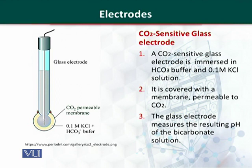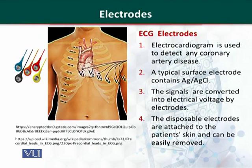The gas permeable membrane does not allow water and other ions to reach the electrode. When this electrode is dipped in a biological sample, carbon dioxide reacts with the bicarbonate buffer and potassium chloride present in the electrode. Due to the reaction of carbon dioxide, a change in pH occurs. This pH change is noted and related to the amount of carbon dioxide.